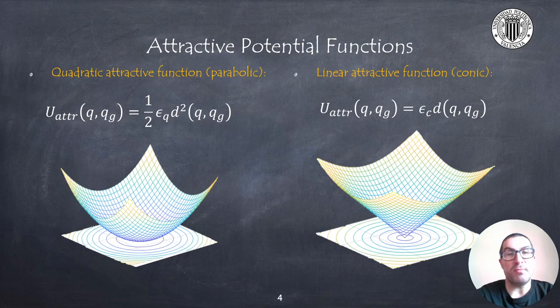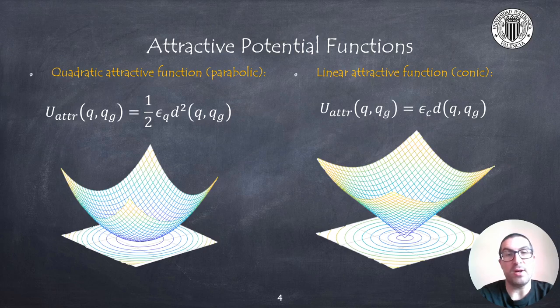An attractive function must have its minimum in the goal configuration. Typically we use quadratic or conic functions. The quadratic function can take very high values when the robot is far from the goal, but at the same time is smooth in the vicinity of the goal.